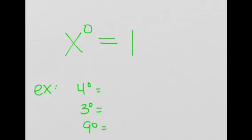Let's look at some examples. We have 4 to the power of 0, what's that equal to? 1. 3 to the power of 0, what's that equal to? 1. 9 to the power of 0, what's that equal to? 1. So as you can see, they're all equal to 1.